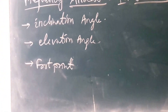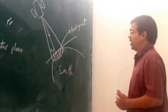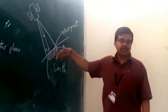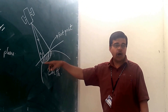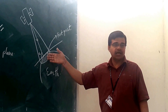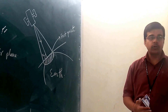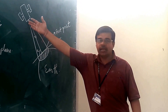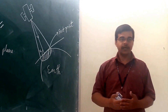The third parameter is footprint. From the satellite, many more signals are falling on the earth. The footprint is the area on the earth where it will experience the signal from the satellite.